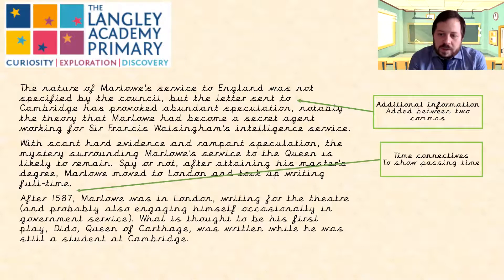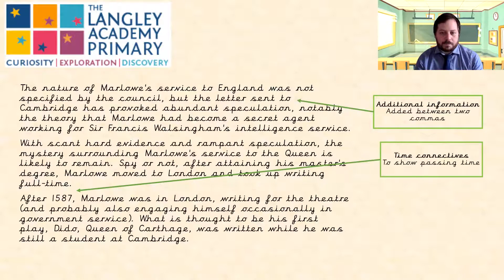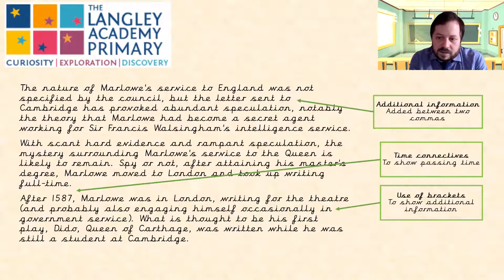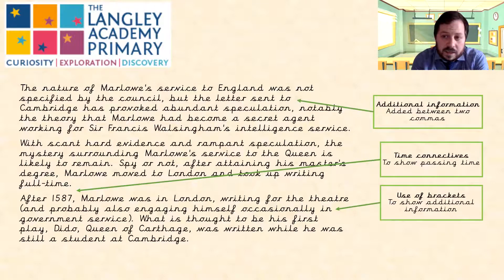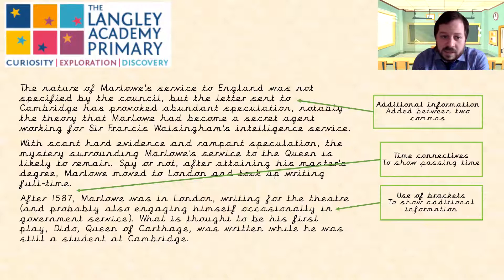We also have time connectives, which are quite important because they show the passing of time throughout, and we have the use of brackets to show additional information. For example: 'notably the theory that Marlowe had become a secret agent working for Sir Francis Walsingham's intelligence agency.' You can see how that additional piece of information fits in.